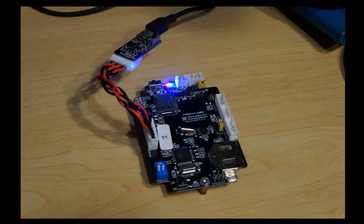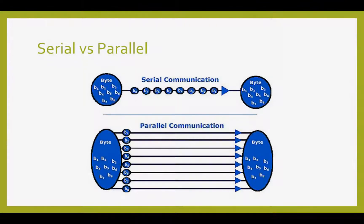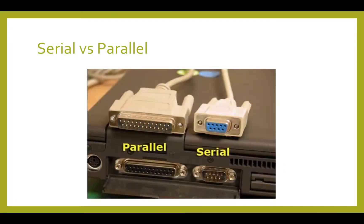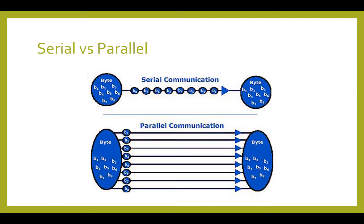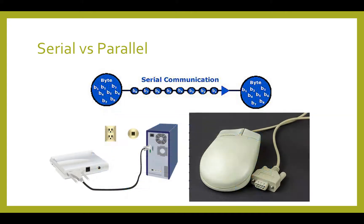Why can't it just communicate directly? Well, a long time ago, PCs had two different ways to communicate. One way was sending data serially, meaning in a series, or sequentially. That means one bit followed another, and you had to wait for all eight bits to come in before you could assemble them into a byte and decode it. Old-school modems and mice worked this way.